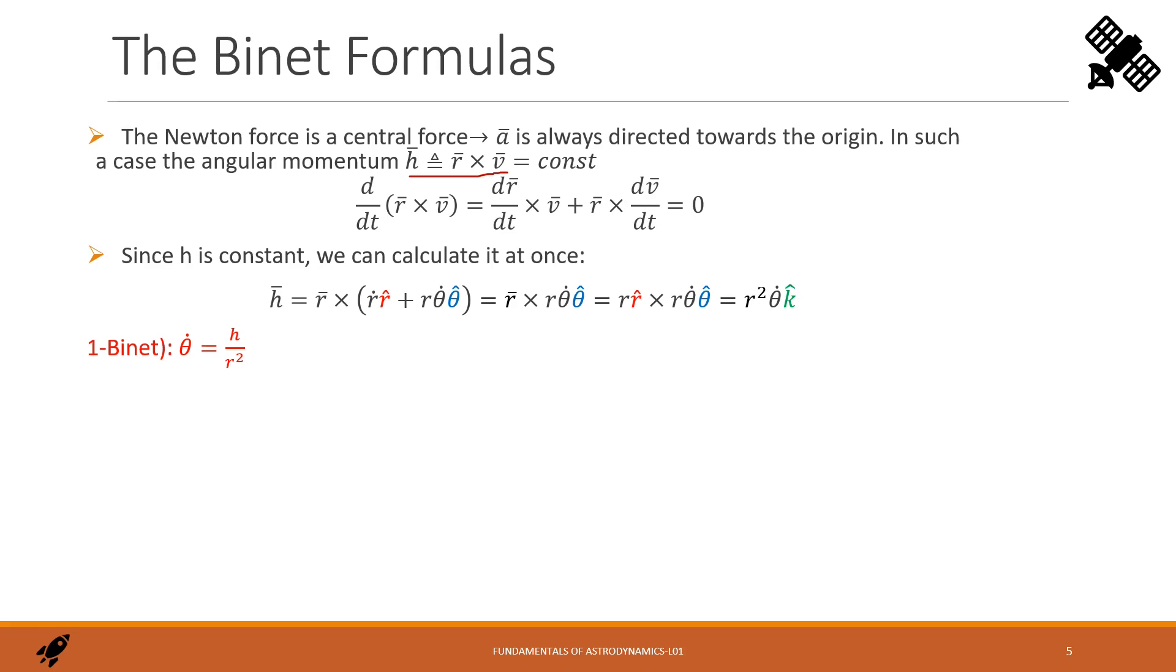The first Binet formula says theta dot equals h divided r square. The component of the velocity along r is r dot that we can express in that form introducing the derivative with respect to theta. We split the derivative into two parts. By plugging the first Binet formula, we find this expression on the right side, that is the second Binet formula. The velocity component along theta is r times theta dot, therefore h over r, that is the third Binet formula.